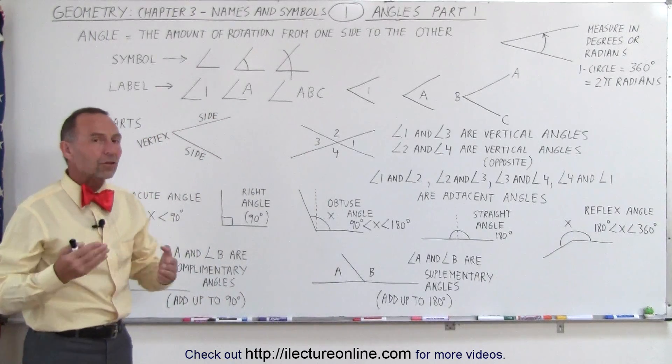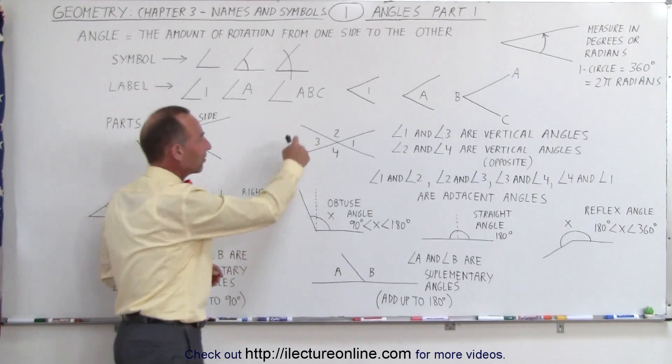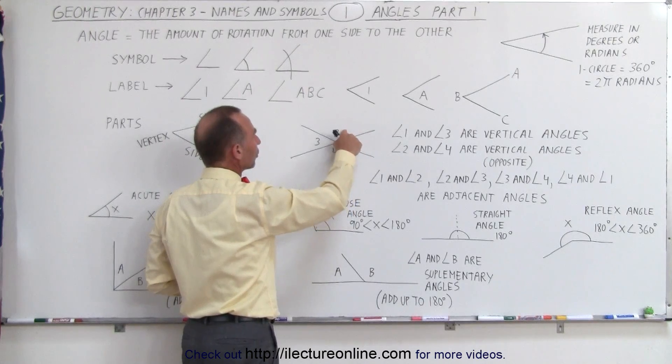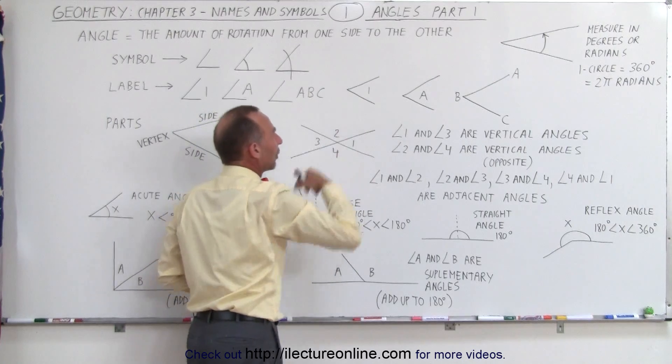Notice that angles can also be formed by taking two lines and having them intersect like this. So here we have an example. And notice this creates four angles. Angle number 1, number 2, number 3, and number 4. So we're using this notation here to notate those four angles.